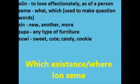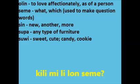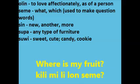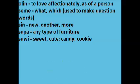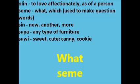'Lon seme' is 'which existence' or 'where'. 'Kili mi li lon seme?' means 'where is my fruit?' So: who, why, and where — all easy enough. When and how will come later. As per 'what' and 'which', here's how you say them.